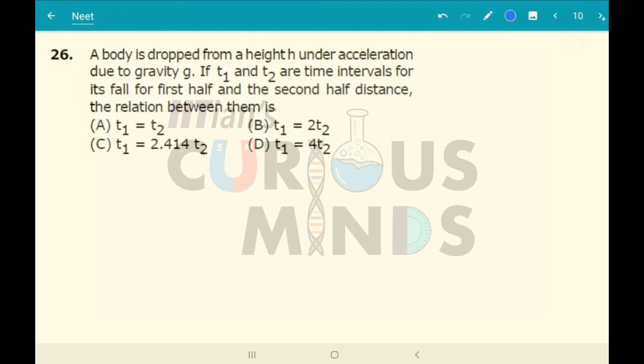A body is dropped from a certain height h. Let me consider this height is h. If t₁ and t₂ are the time intervals for the body for the first half and the second half distance, the relationship between them will be equal to...